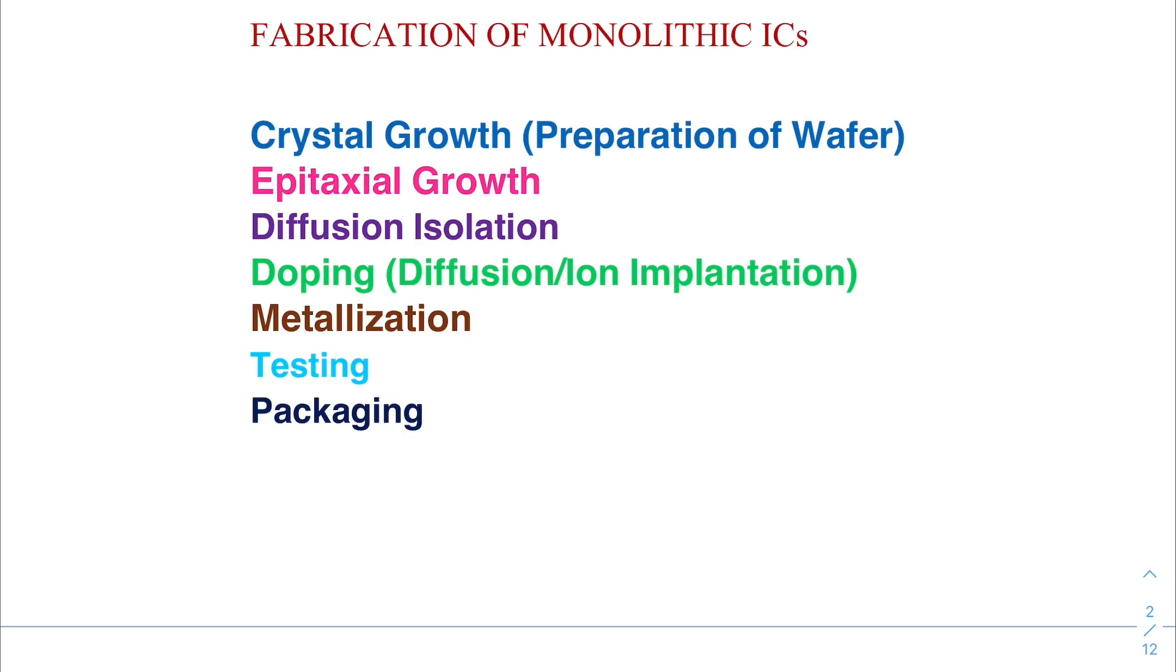These are crystal growth, epitaxial growth, diffusion isolation, doping. There are two methods for doping, diffusion or ion implantation, metallization, testing and packaging. I will explain each step one by one.